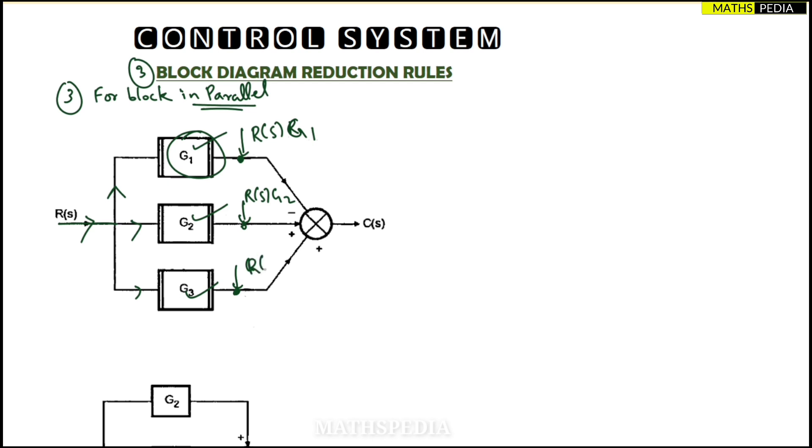Here it will be R(s) into G2. Here it will be R(s) into G3. Now here we have a summing point where it has to be added. Observe the sign also: here it is negative, here it is positive, here it is positive. The first one negative, that means minus R(s)G1. Rest two positive, so plus R(s)G2, plus R(s)G3. R(s) I can take common; the left out part will be minus G1 plus G2 plus G3.